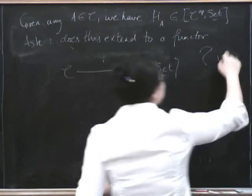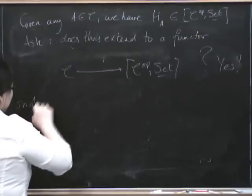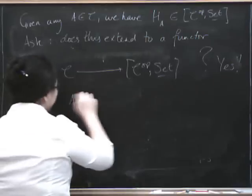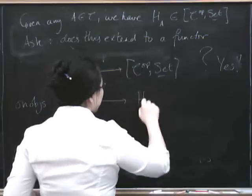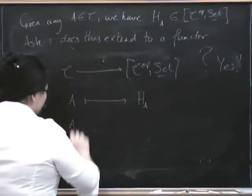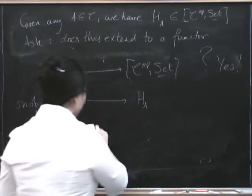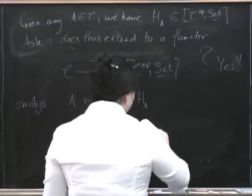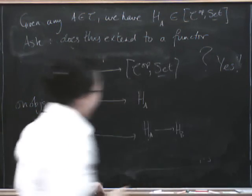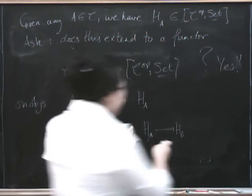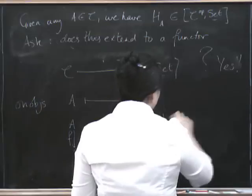Does this extend to a functor from C to C op Set? And the answer is yes. So on objects, we saw it's going to send A to the functor H lower A. So what's it possibly going to do if we take a morphism F from A to B? Where can it possibly go? Well, it's got to take ourselves to a morphism from H A to H B. But what are these? These are functors. So this has to be a natural transformation.